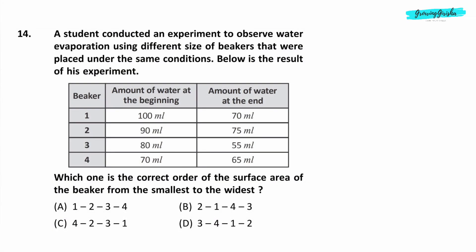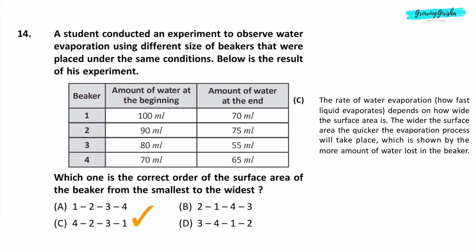Question 14. A student conducted an experiment to observe water evaporation using different size of beakers that were placed under the same conditions. Below is the result of his experiment. Which one is the correct order of the surface area of the beaker from the smallest to the widest? Option C. 4, 2, 3, 1.